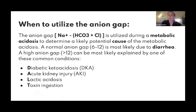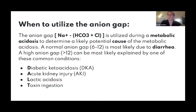A great acronym to remember is DALT. First: Diabetic Ketoacidosis — when the body can't use glucose, lipolysis releases free fatty acids, which turn into ketones that accumulate in the body. This is a very common cause of high anion gap metabolic acidosis.